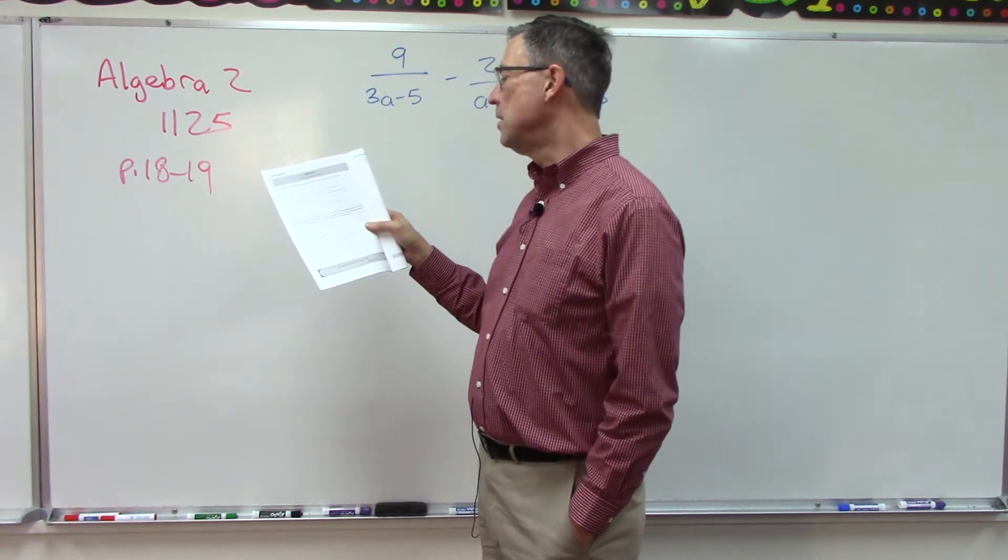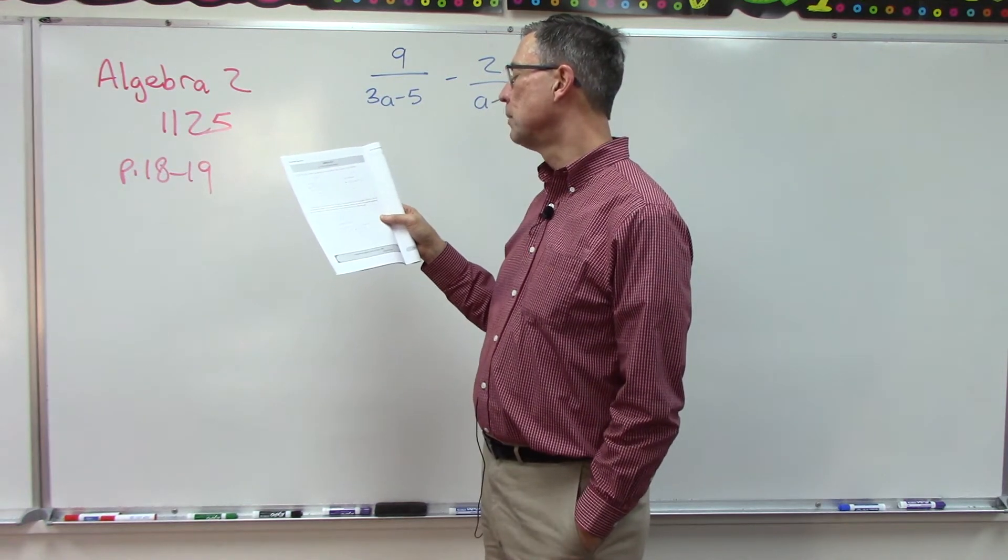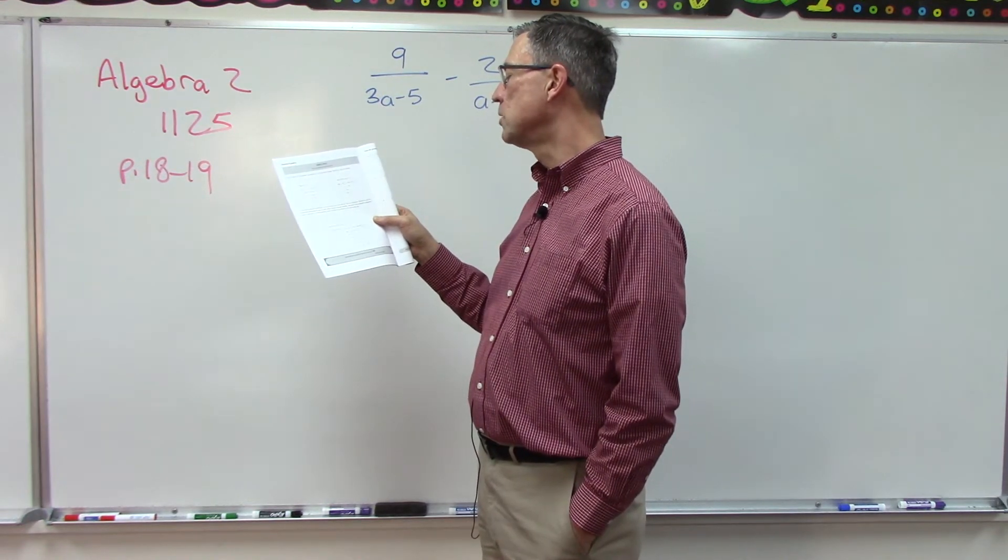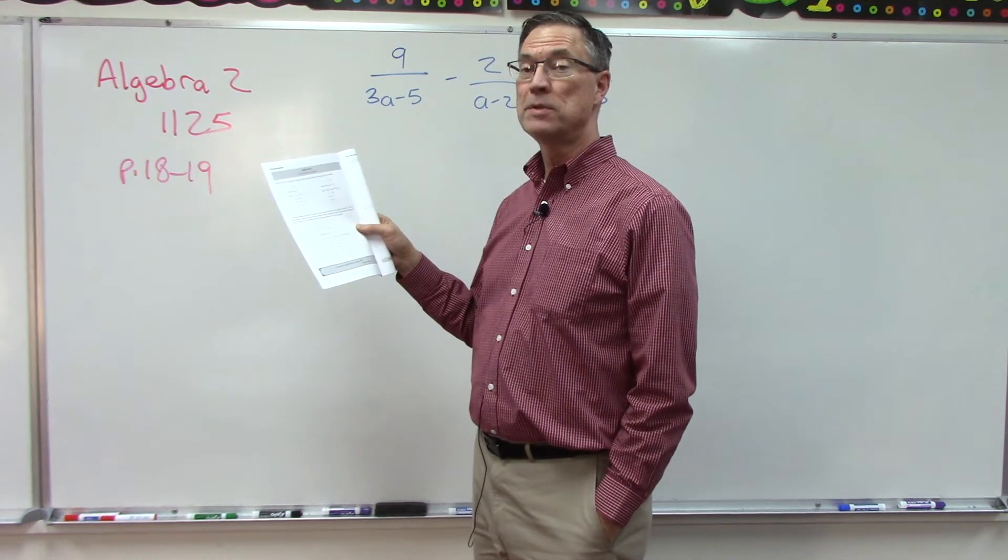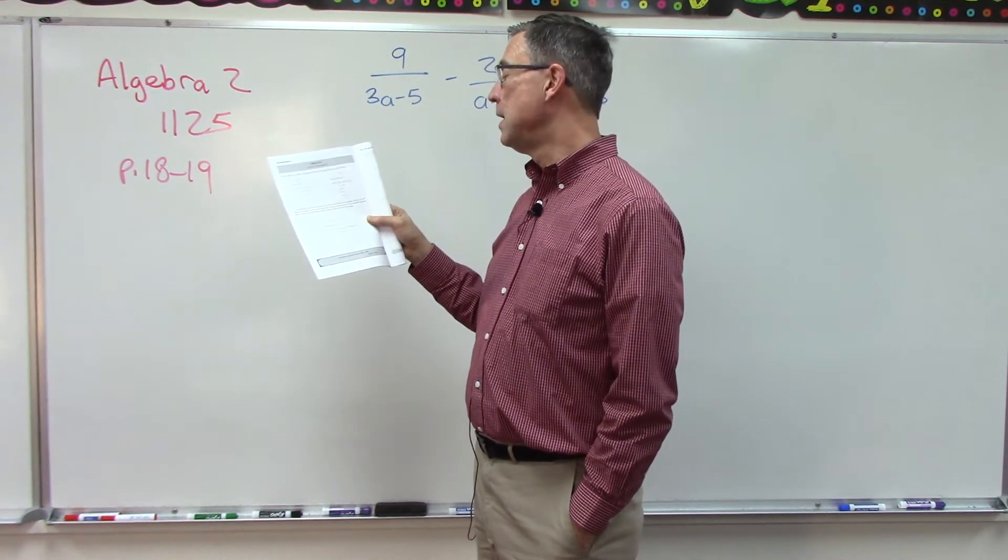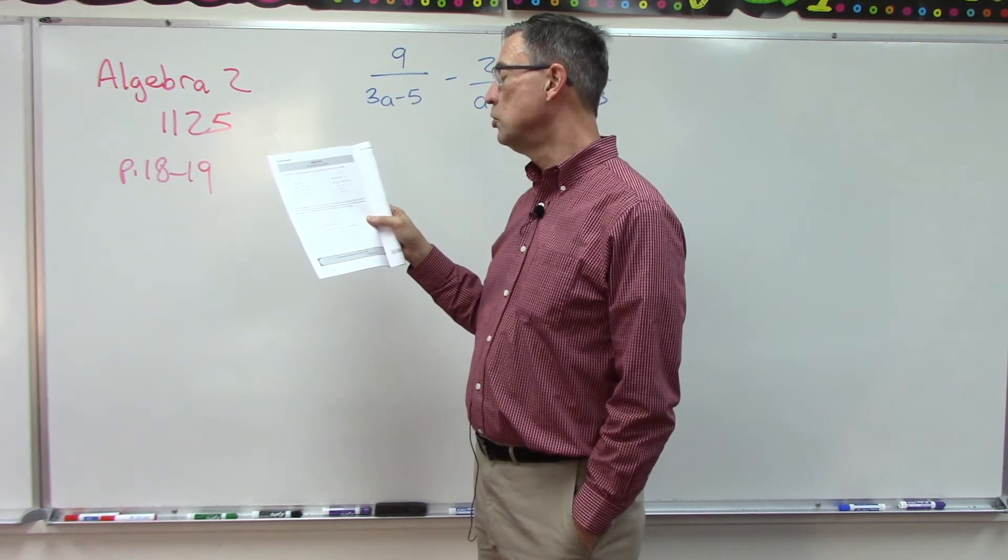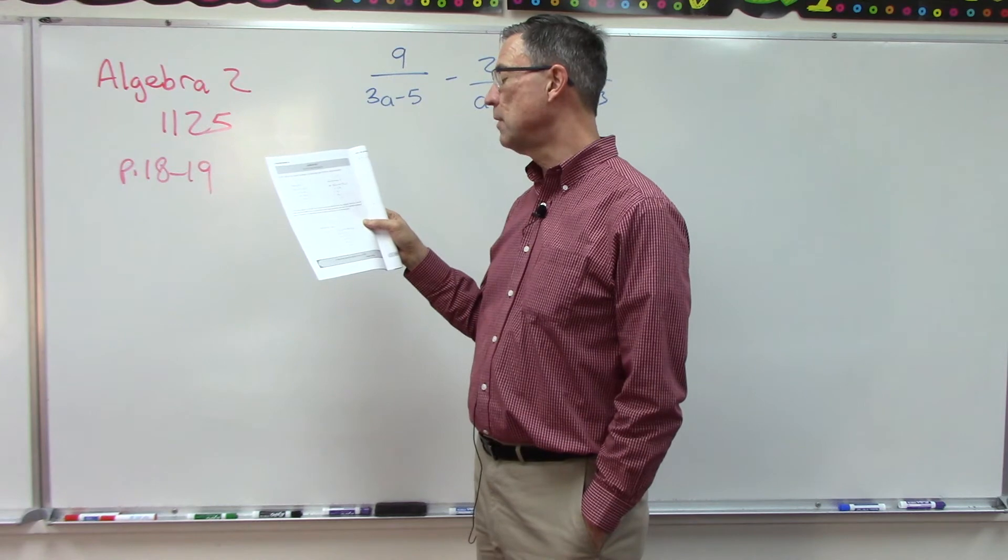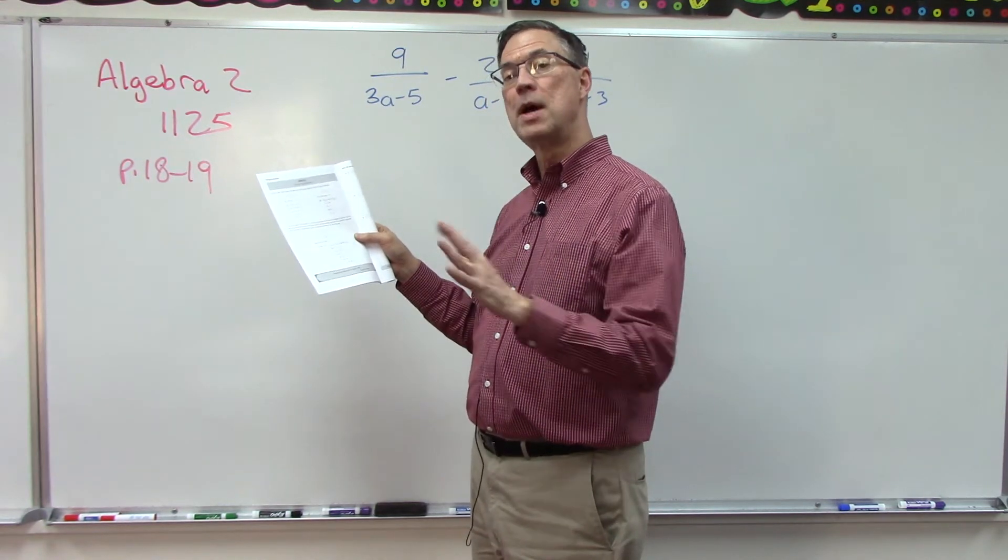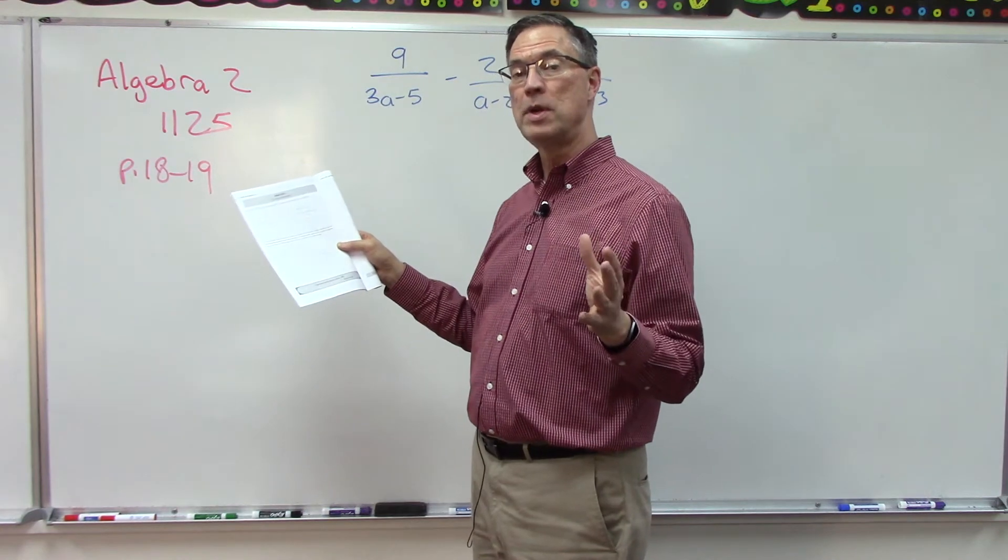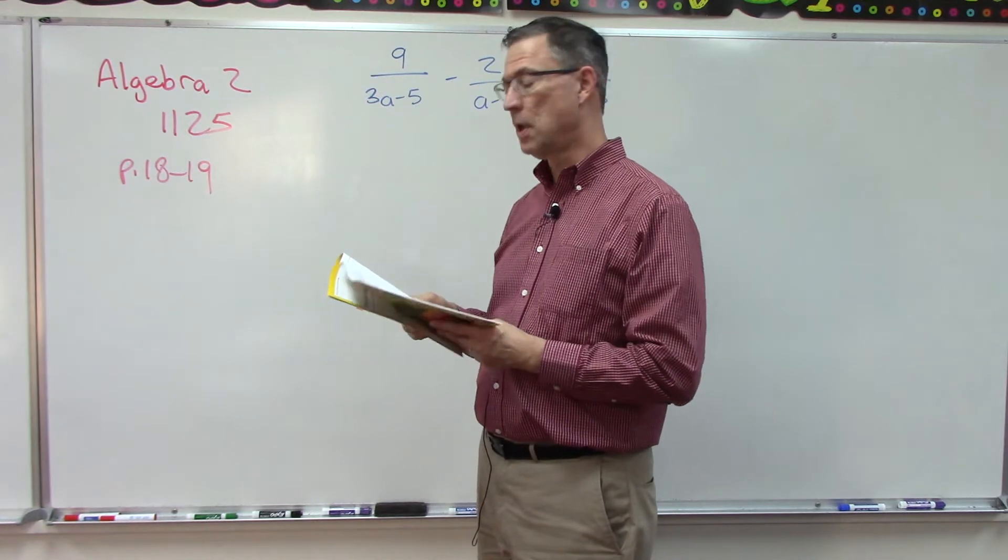And then the third example is a little more complex: b plus 5 and we have b squared minus 25. Now recognize that that can be factored to b plus 5 and b minus 5, and then that's what the term on the right is as well. So really we only have two factors, b plus 5 and b minus 5. We multiply both of those factors times both sides of the equation, then see what cancels out and multiply together whatever's left.